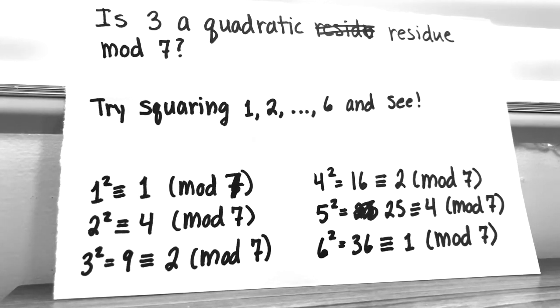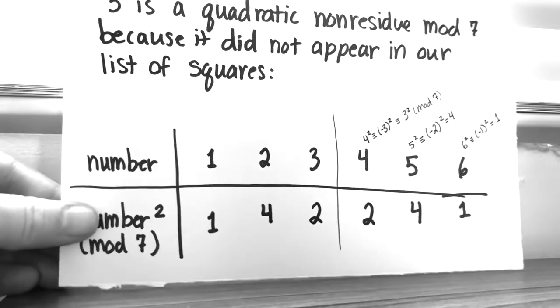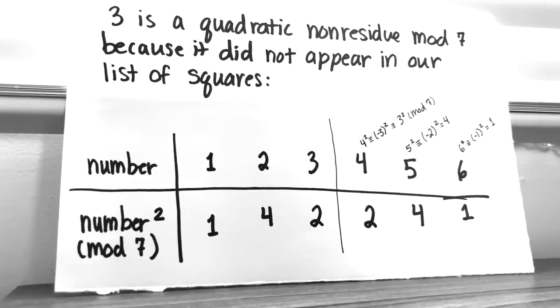So 3 doesn't appear anywhere in this list. We did not get 3 when we squared any of our numbers. And since 3 did not show up in that list of squares, then 3 is not a quadratic residue, so it's a quadratic non-residue mod 7.